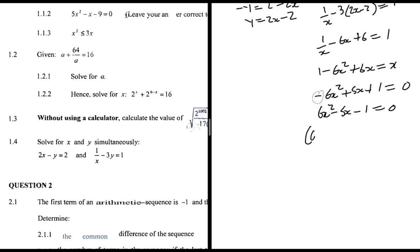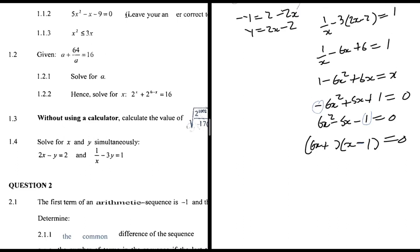Factorizing 6x² - 5x - 1: the only factors of 1 are 1 and 1. Placing -1 so that 6x × (-1) = -6x and x × 1 = x gives -5x for the middle term. So (6x + 1)(x - 1) = 0, giving x = -1/6 or x = 1.